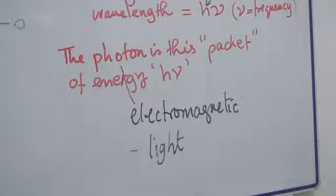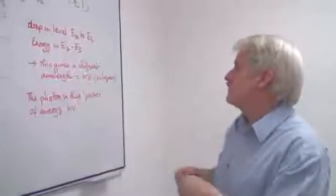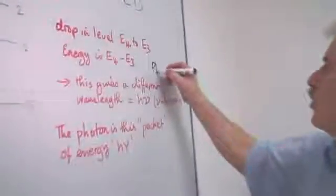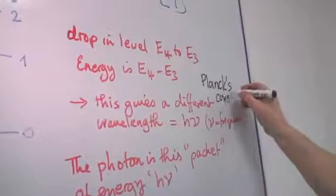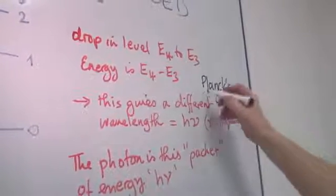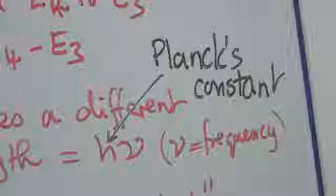H is a constant called Planck's constant, after a gentleman called Planck. So that's Planck's constant, H nu H. And nu is the frequency.